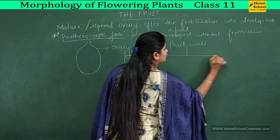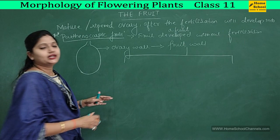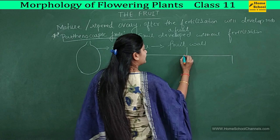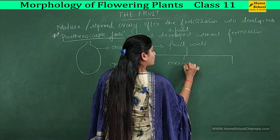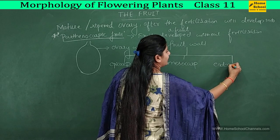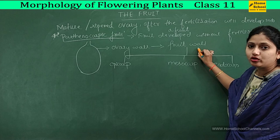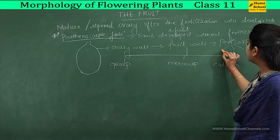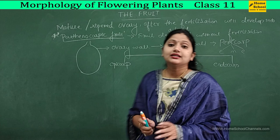The fruit wall usually has three layers. The outermost layer is called the epicarp, the middle layer is called the mesocarp, and the innermost layer is called the endocarp. The ovary wall changes into the fruit wall, which is called the pericarp. This pericarp has three layers: epicarp, mesocarp, and endocarp.